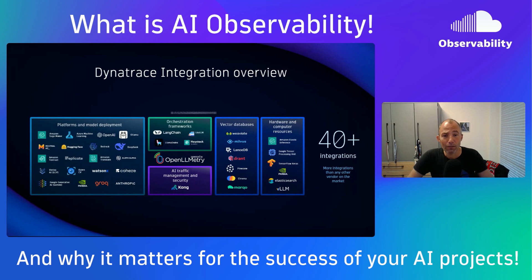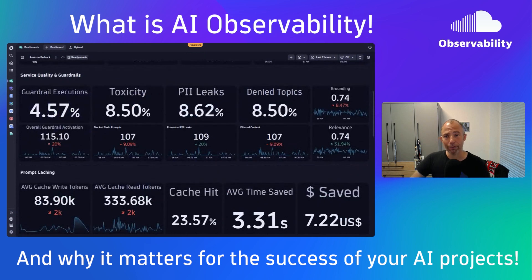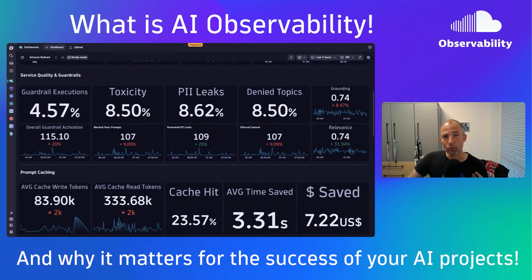From a Dynatrace perspective, we have integrations with all of the major vendors and frameworks. Also a quick shout-out to OpenTelemetry — it's a new standard where we can trace your prompts through your systems to understand what prompts have been given, what happened, and what came back. We also have great examples on our Playground tenant, with automated ready-made dashboards to monitor health and performance of your LLM systems, guardrails, understanding how many prompts have been filtered out, toxicity, and PII leaks. These are capabilities you can measure, monitor, and act on.